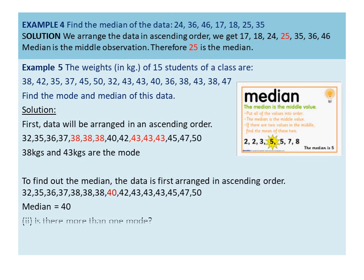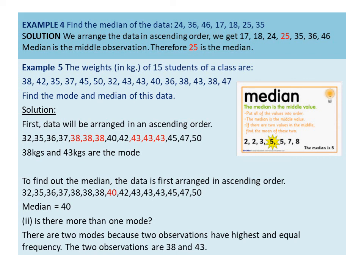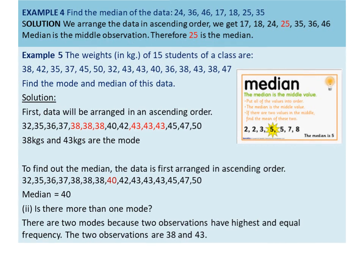There is more than one mode here because two observations — 38 and 43 — have the highest and equal frequency. Now you can try exercise 3.2 in your notebook. Thank you.